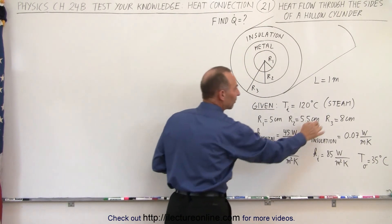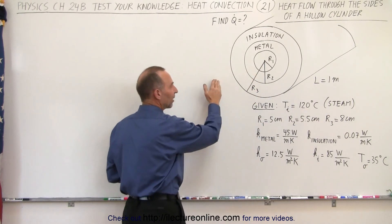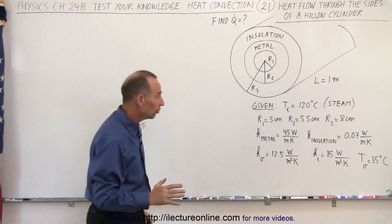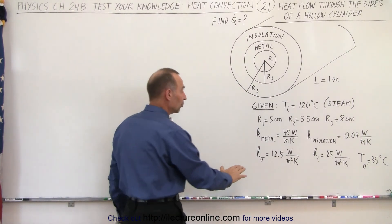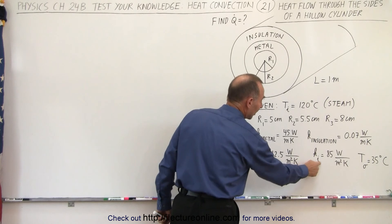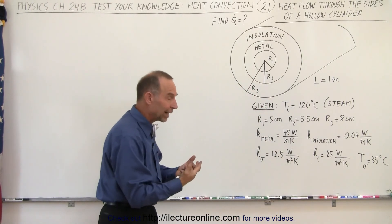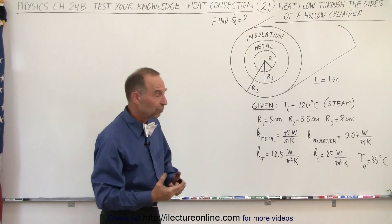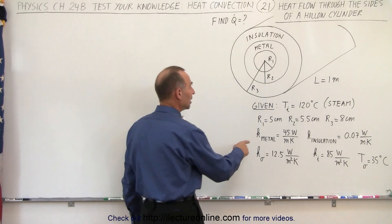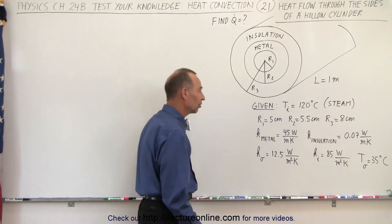On the inside we have steam at 120 degrees centigrade and on the outside we have air at 35 degrees centigrade. Notice the transmission coefficients on the outside and inside. On the inside it's quite large because we do have steam on the inside, which more readily transmits heat through convection, and we have the conductivity constant for metal and for the insulation.